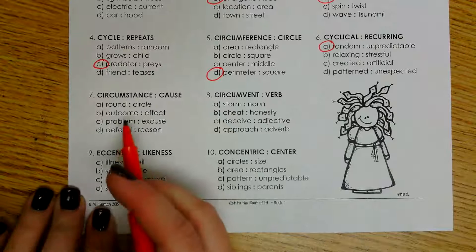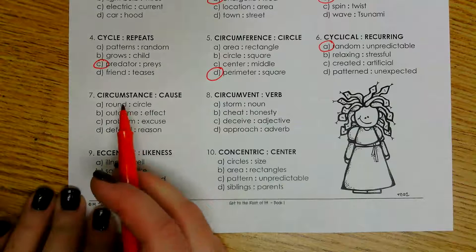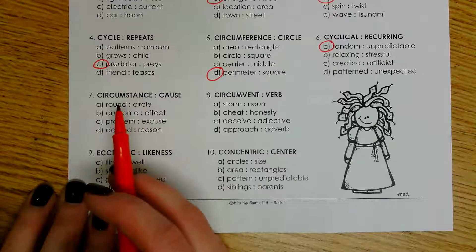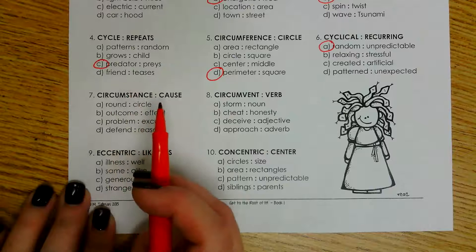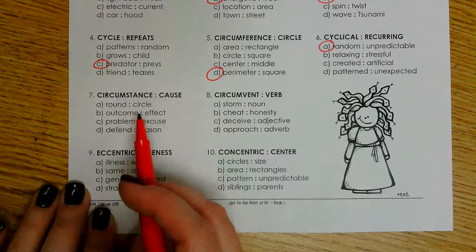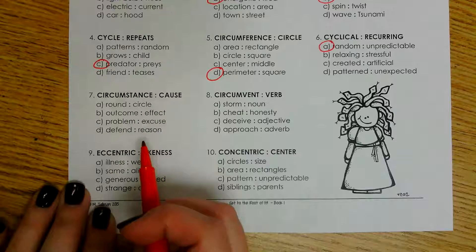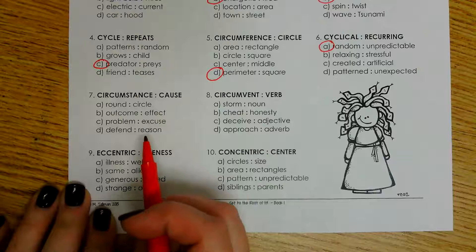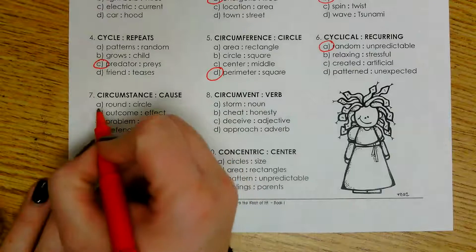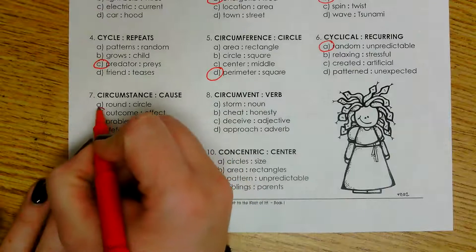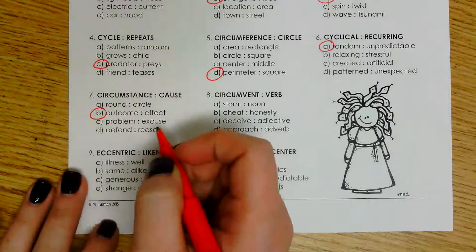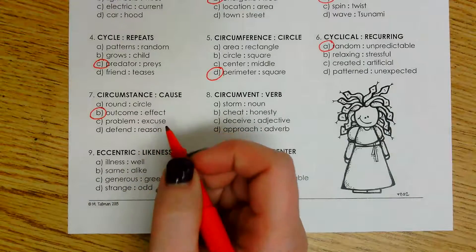Number seven, circumstance and cause. We know that a circumstance is the cause of something. So looking at these, we need two words that are similar. I'm going to choose outcome and effect, because the outcome of something is the effect of something that took place.